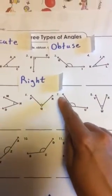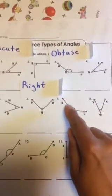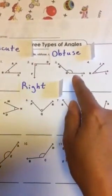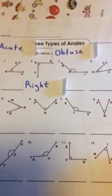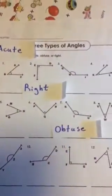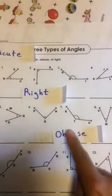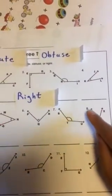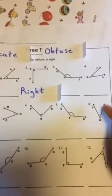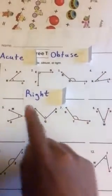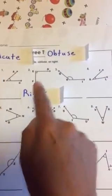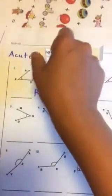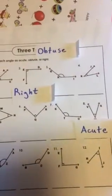Let's look at number seven — B-W-X. What does this one look like? Acute, right, or obtuse? That's right, guys — it is a cute little angle.